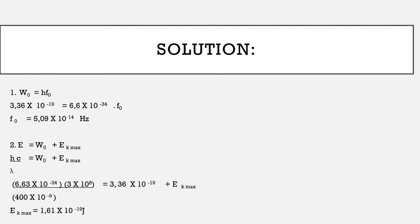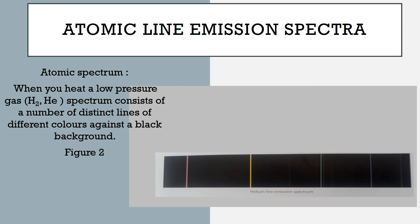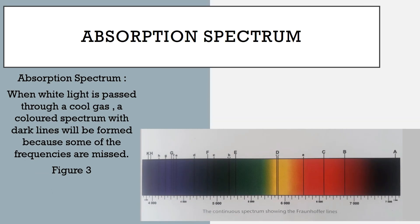Another important aspect in this topic is atomic line emission spectra. Under this, there are two types: the emission spectrum and the absorption spectrum. When you heat a low-pressure gas such as hydrogen or helium, the spectrum consists of distinct lines of different colors against a black background. When white light passes through a cool gas, a colored spectrum with dark lines is formed because some frequencies are absorbed.